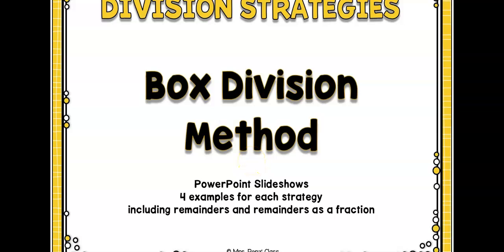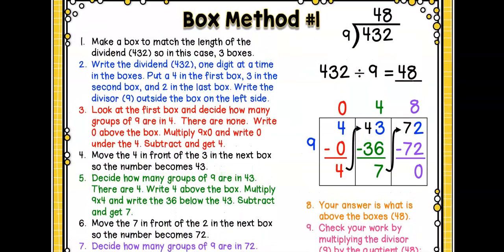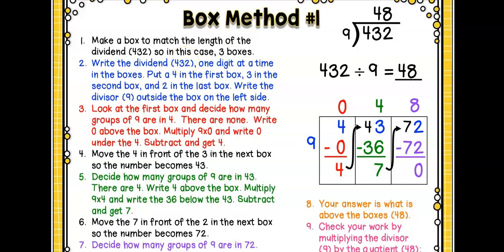One of the methods is called the box division method. I'm going to just briefly go through it, and then I will show you how it works with our work as we're going through a problem. So, the box division method. First, you're going to make a box to match the length of the dividend, 432. So, in this case, it's going to have three boxes. Write the dividend, 432, one digit at a time in the boxes. Put a 4 in the first box, a 3 in the second box, and a 2 in the last box. Write the divisor, 9, on the outside of the box on the left. Now, remember kiddos, this is just like when we were using the box or rectangle method when we were doing our multiplication, other than now we are trying to divide.